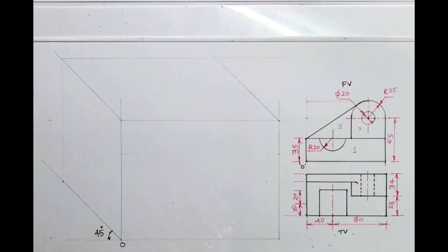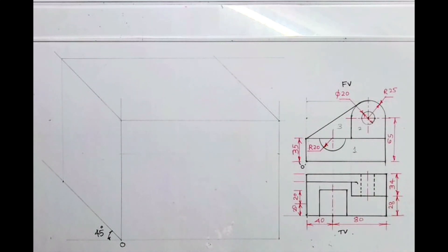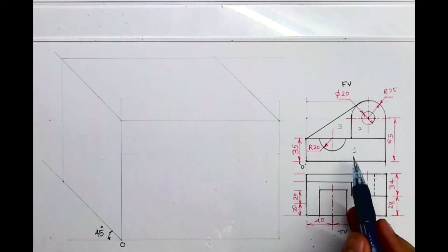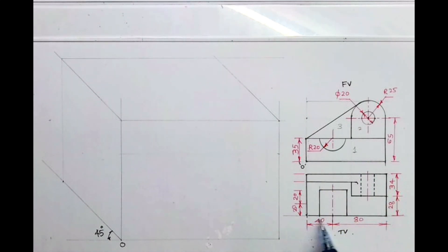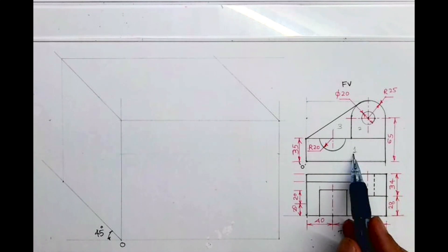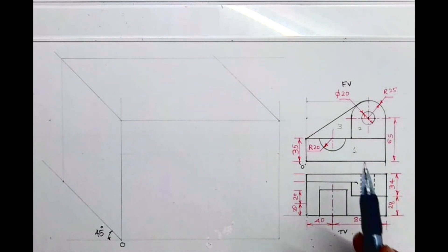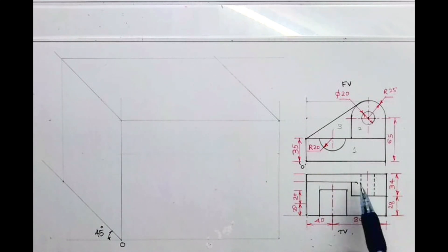Welcome to technical drawing. Today we'll see an oblique drawing where front view and top view are given. There are three parts in the front view and top view respectively. Part one is here, part two is inside by 28, and part three is behind.